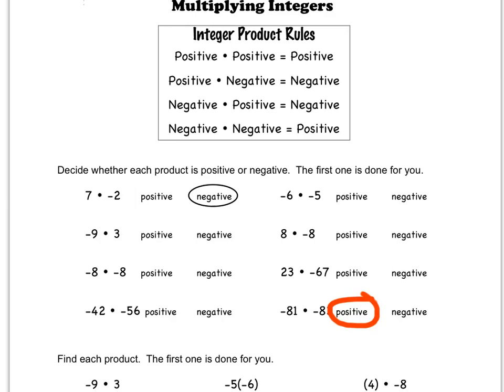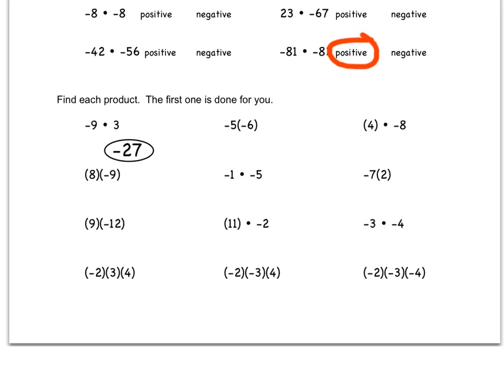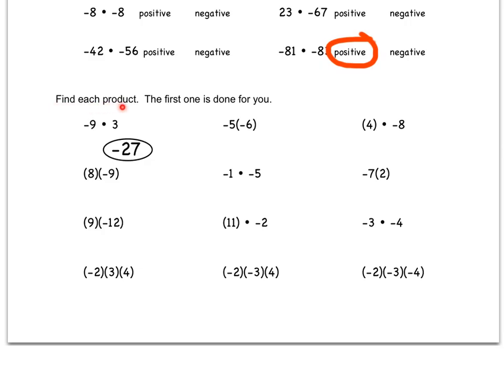Moving on to the lower half of the worksheet, we see it says find each product. Again, a product is what we get when we multiply things, and this little bullet symbol here means multiplication. Again, the first one is done for you. You have negative 9 times positive 3.